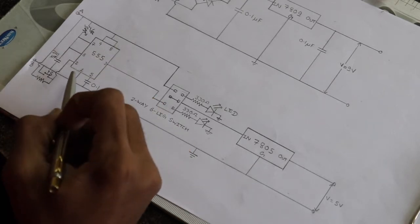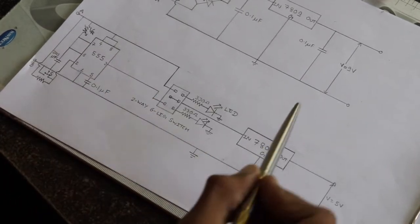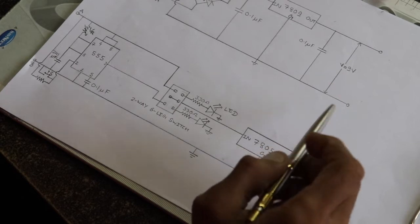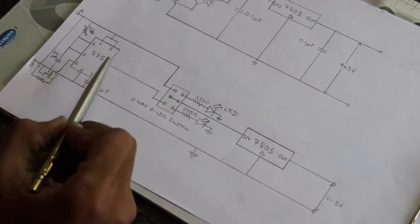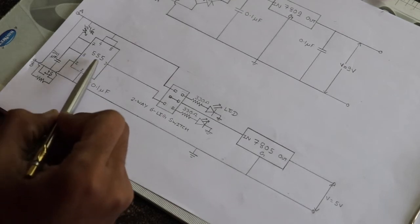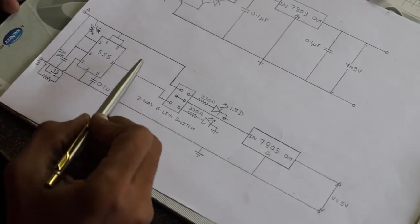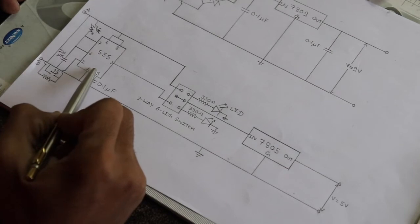So here we will see about the delay timer circuit. The output from the above circuit is given to the input of the timer circuit. The timer circuit consists mainly of IC 555 which is a basic timer circuit. We are using this timer in a monostable mode.